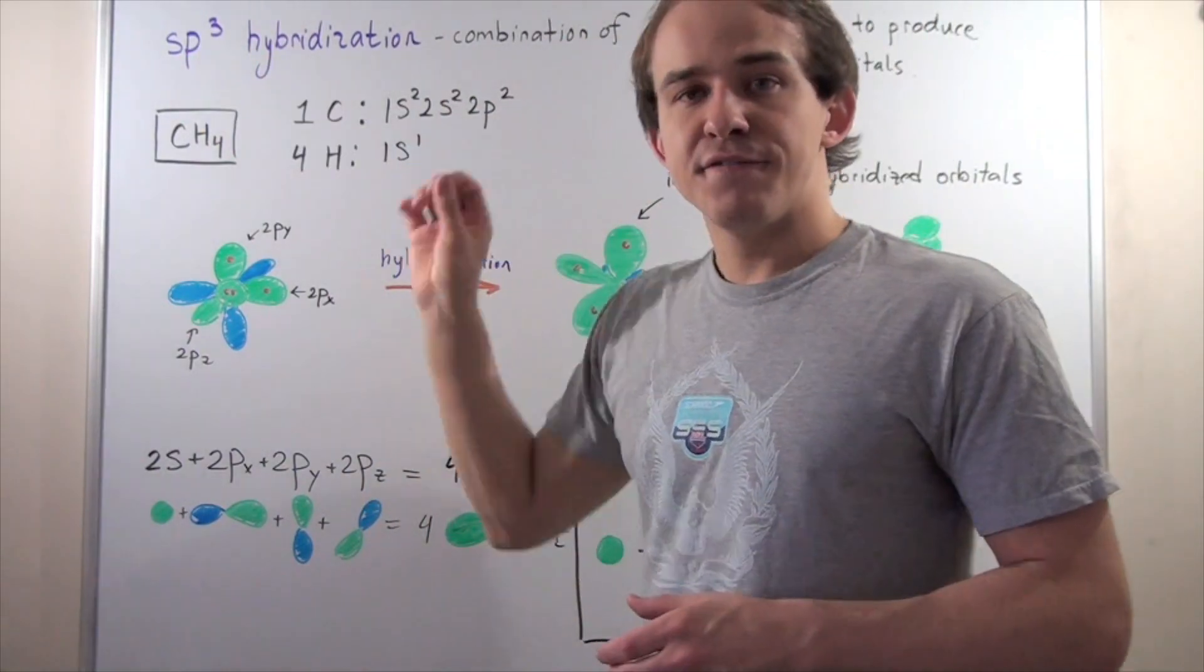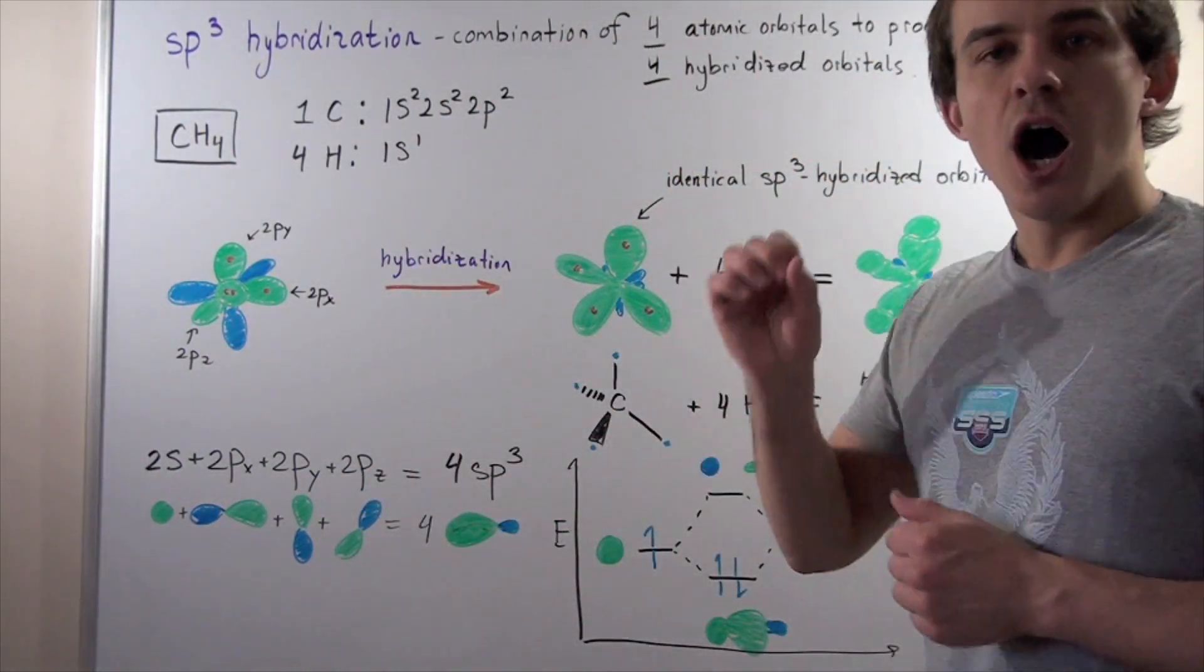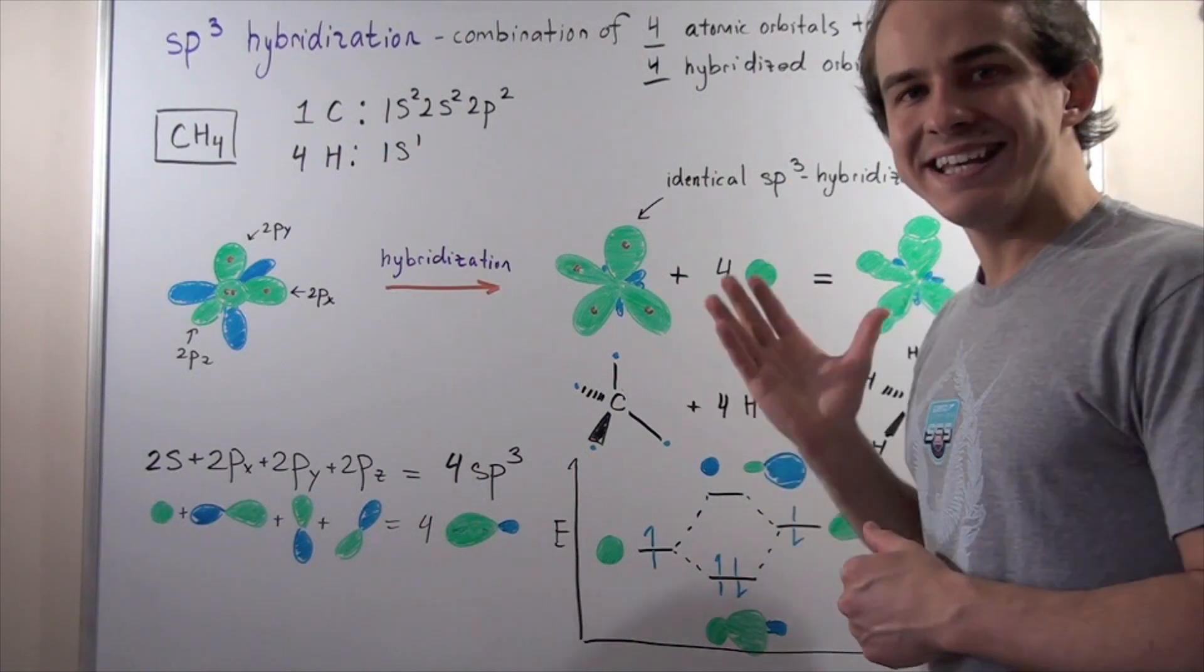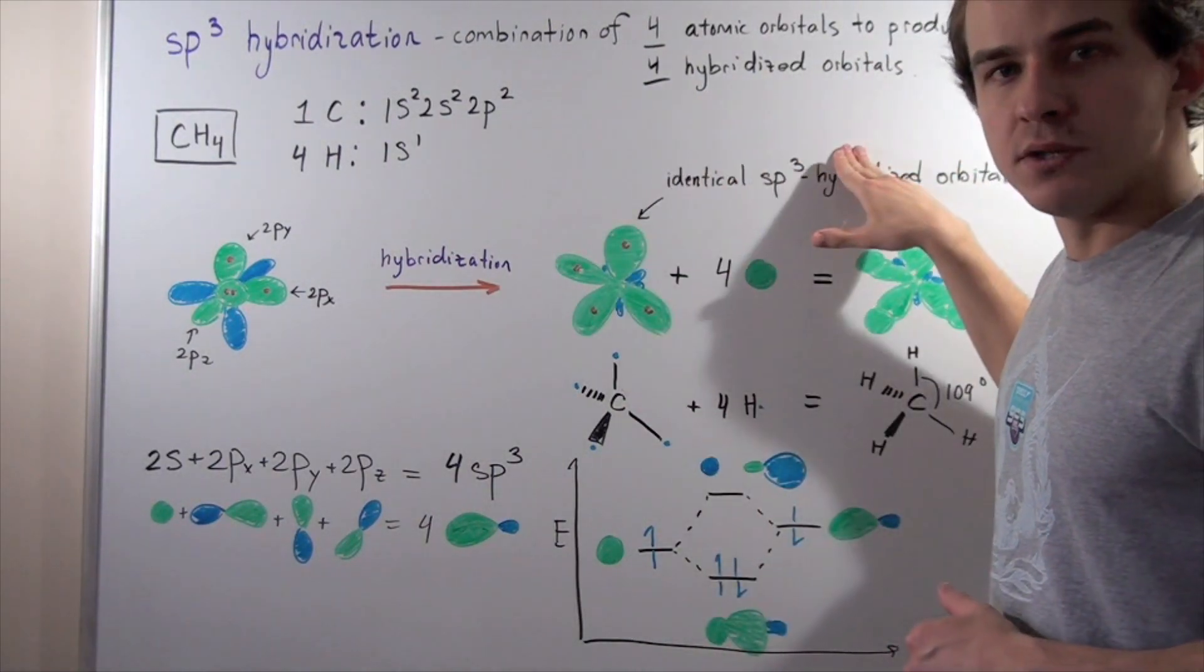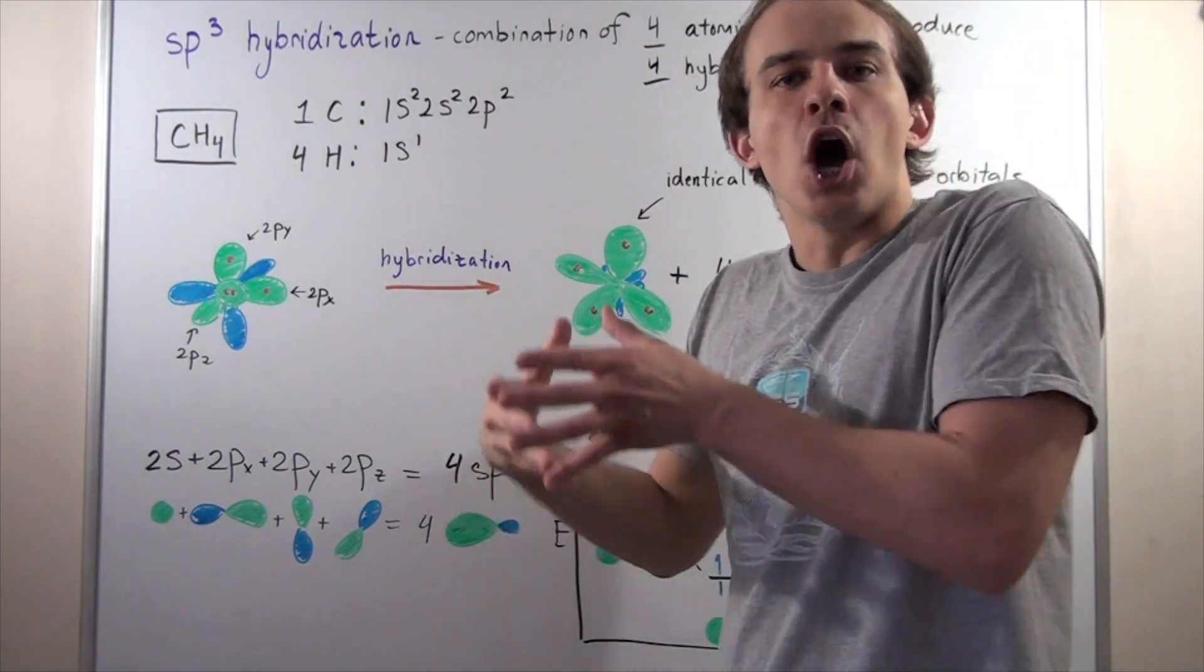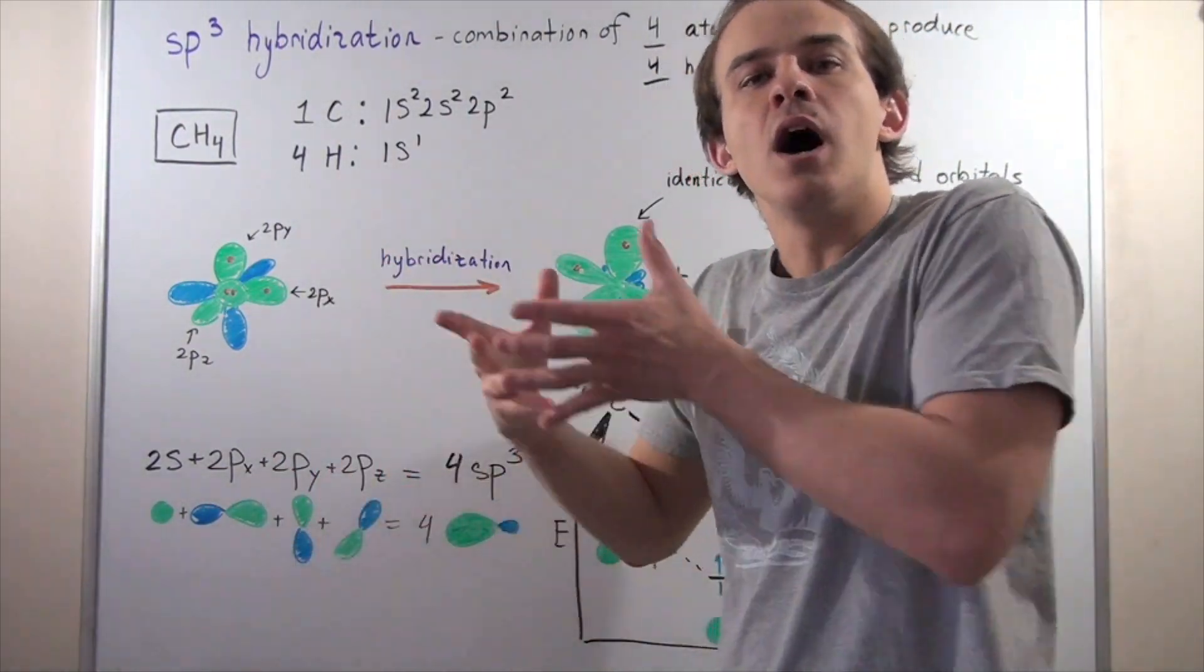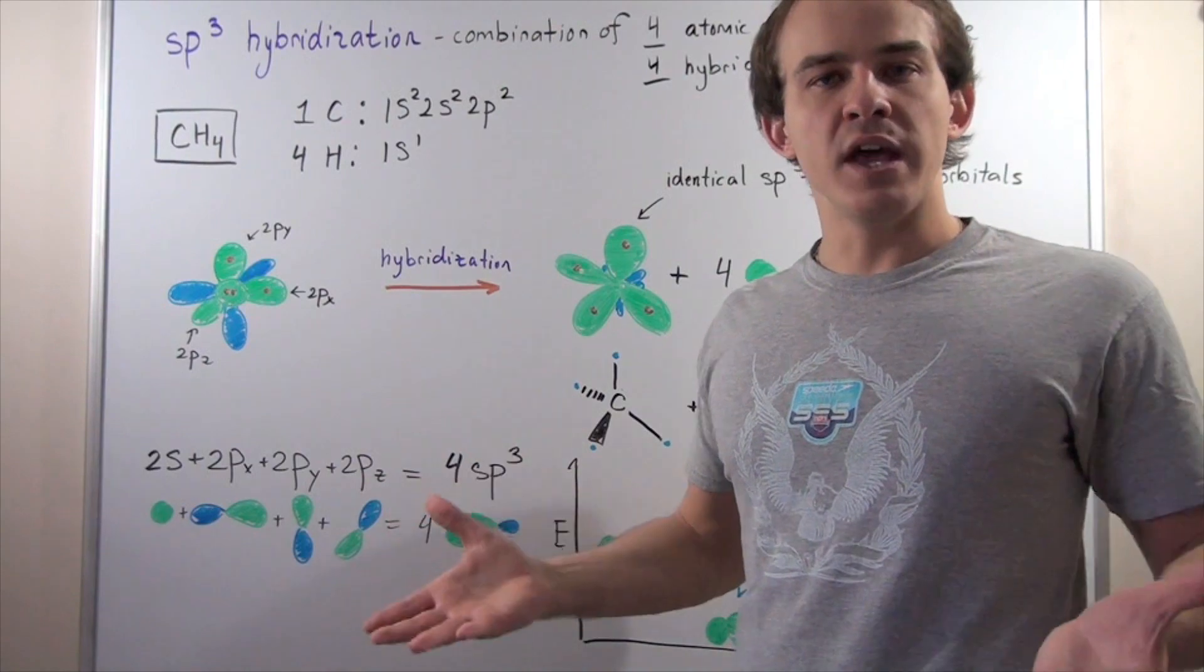This is defined as simply the combination of four atomic orbitals in a given atom to produce four hybridized orbitals, which then can interact with other atomic orbitals of other atoms to produce covalent bonds.